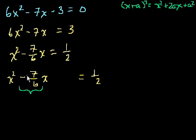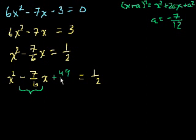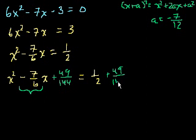This term is going to be half of this coefficient, squared. Half of minus 7/6 is minus 7/12. So a equals minus 7/12 for our example. And what do we add to both sides? We add a squared. So what's 7/12 squared? It's going to be 49 over 144. If I added it to the left-hand side, I have to add it to the right-hand side too — plus 49 over 144.